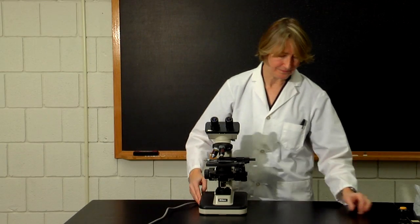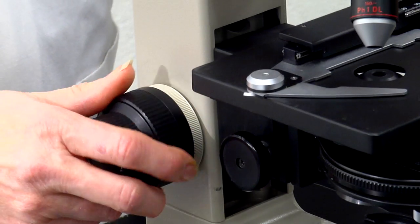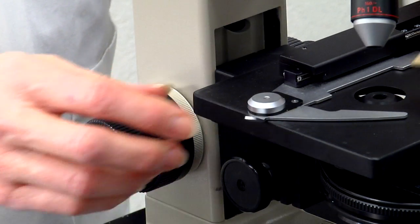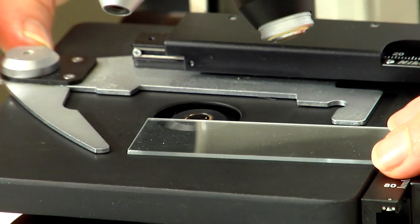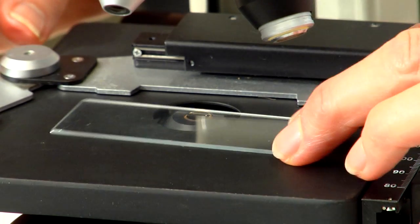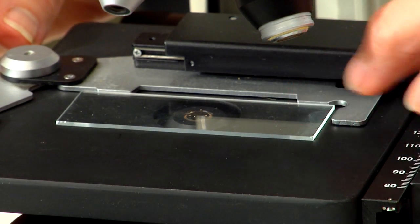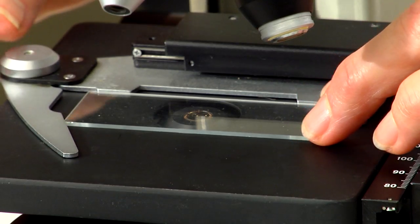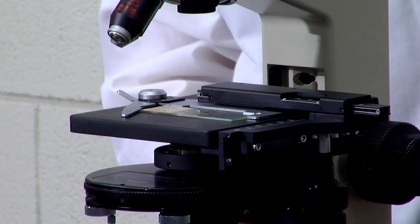Let's place a specimen onto the stage. Lower the stage using the coarse adjustment knob and secure the slide with the mechanical stage clip. Be sure the slide is secured in the clip, not on top of it or beneath it, or it may slip when you try to move the slide around during viewing.